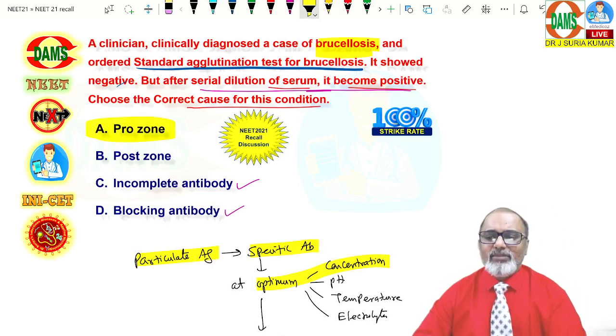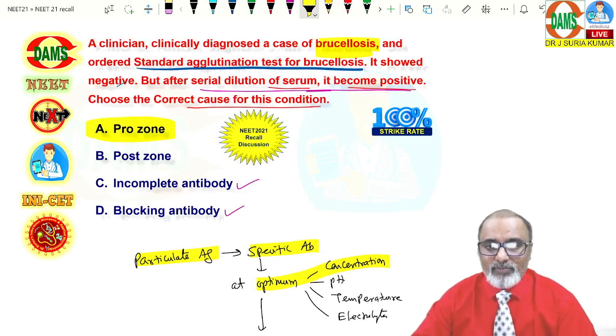Prozone phenomenon seen in many serological tests. Brucella, Treponema pallidum, many conditions we can get prozone phenomenon. If you strongly suspect, if the test is negative, dilute the serum. Even the dilution negative, then we can say it is negative. There is no antibodies present.